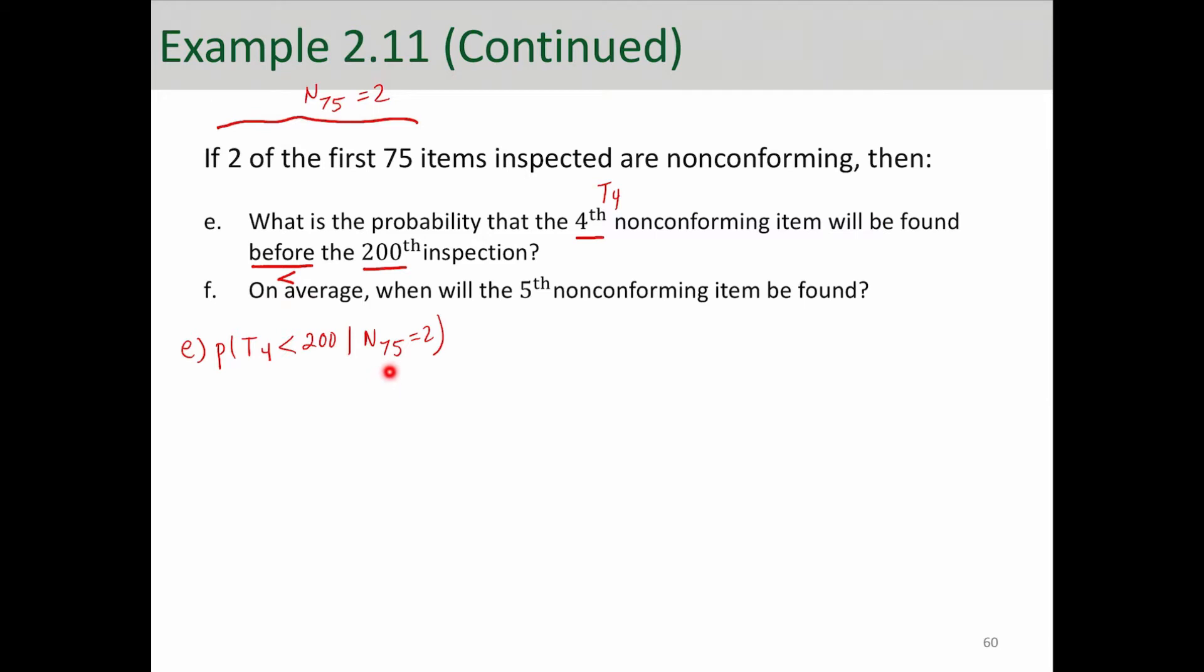If you have already passed 75 inspections and found two non-conforming, in order to see the fourth non-conforming in total before the 200th, you have 125 inspections to go, and you want to see the second non-conforming before the 125th inspection. So that becomes probability of T2 less than 125.